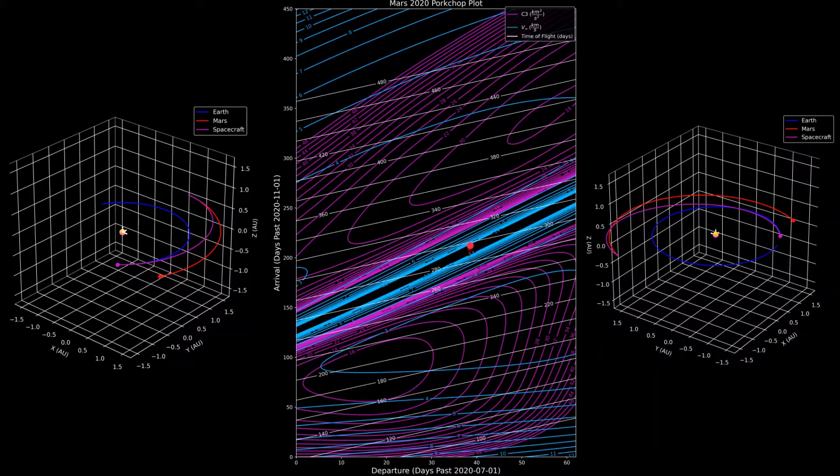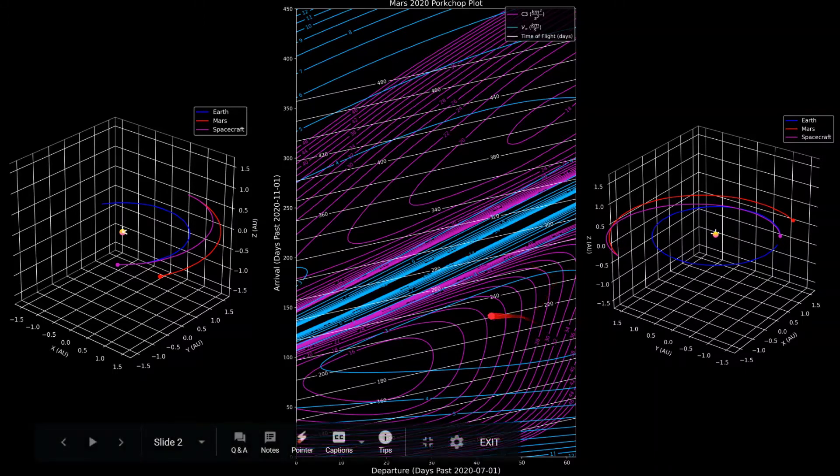Just like the other pork chop plot, this is also a contour plot. If you follow this contour right here that's labeled 16, at every one of those points you will have a C3 equal to 16 for all of those trajectories. Notice that the gap is still here, where below the gap is a change in true anomaly of less than 180 degrees, and above is greater than 180 degrees.